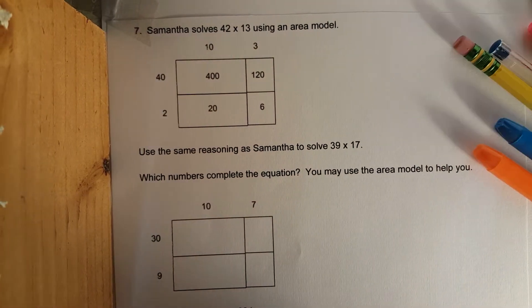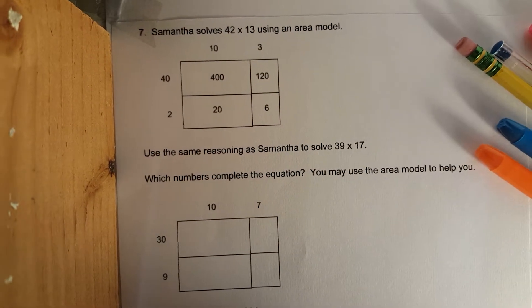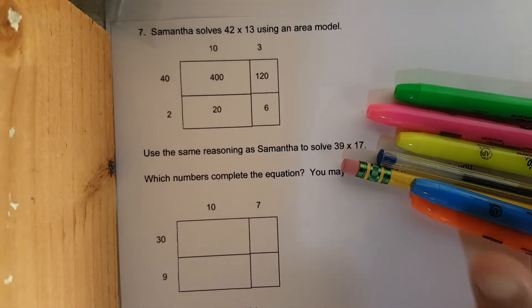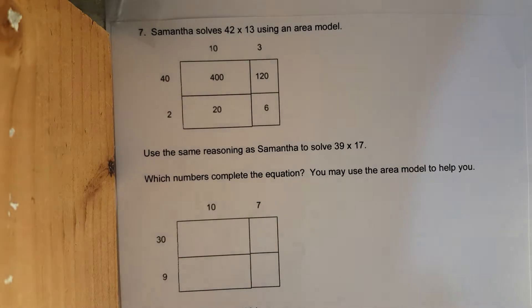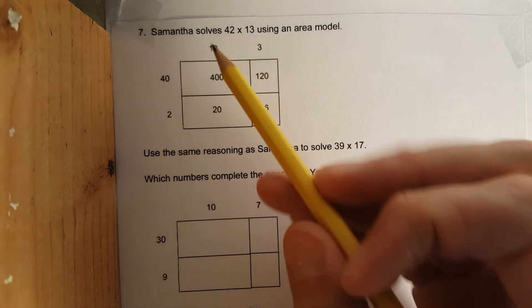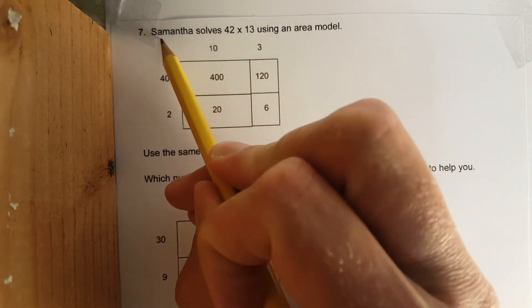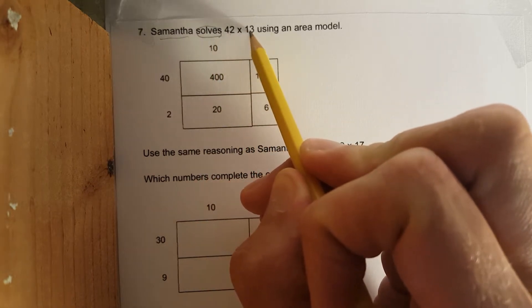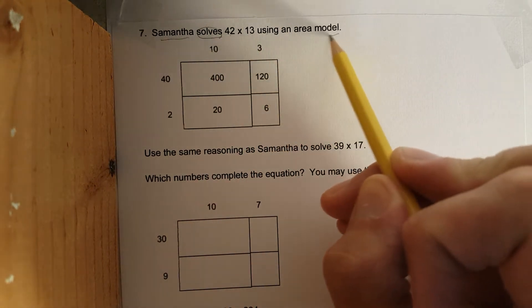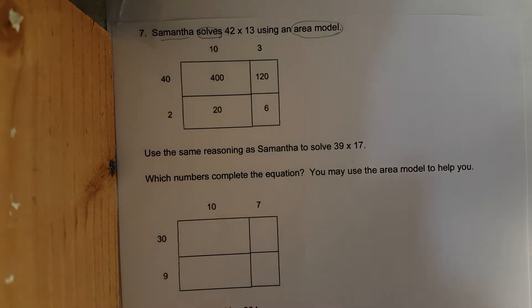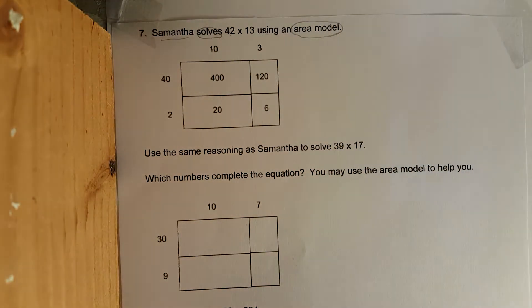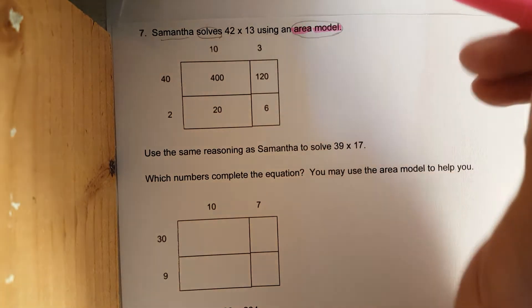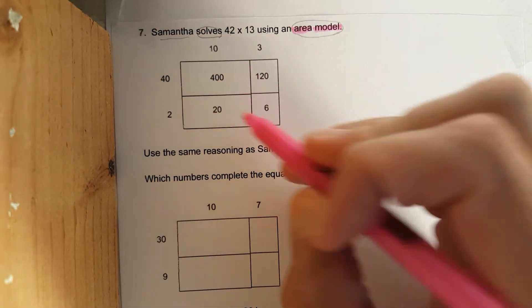At the very top, sorry placing up the phone, there's all my annotating colors. Pencil first. Samantha solves 42 times 13 using an area model. Let's identify that academic vocabulary - area model, this is an area model.